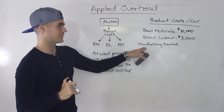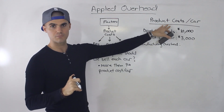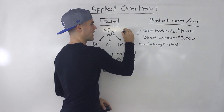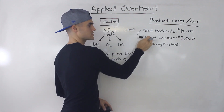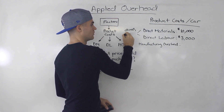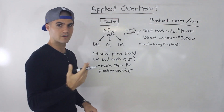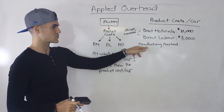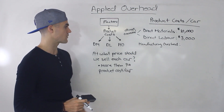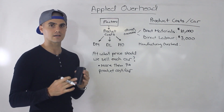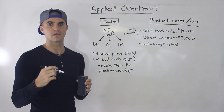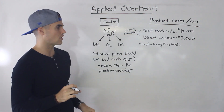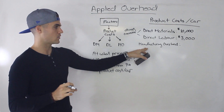Here's the question: how do we apply manufacturing overhead on a per car basis? Because direct materials and direct labor are direct costs — hence the name — they are traceable. It's very easy to see how much material and labor is used per car. But manufacturing overhead is not directly traceable. It's things like factory building depreciation, the factory supervisor's salary, or utilities. You can't really trace those to each car.